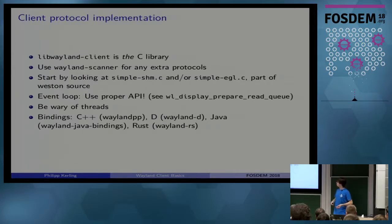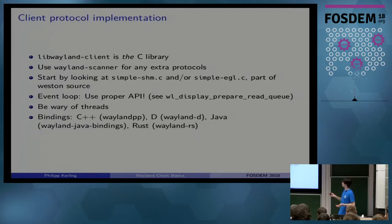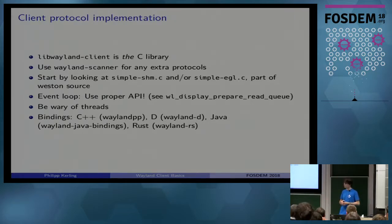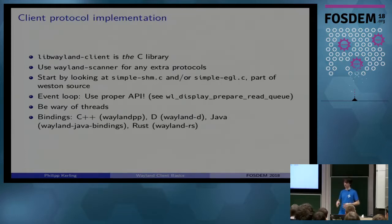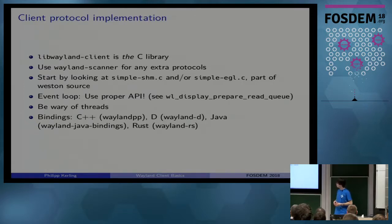How do you use all this in C? There's the C library called libwayland-client, and all other stuff is currently built on top of that — it's like XCB or Xlib. You have to use the wayland-scanner executable for any extra protocols you're using, to generate C code from the XML files. If you want to integrate this into your event loop, use the proper API — see the documentation for details.